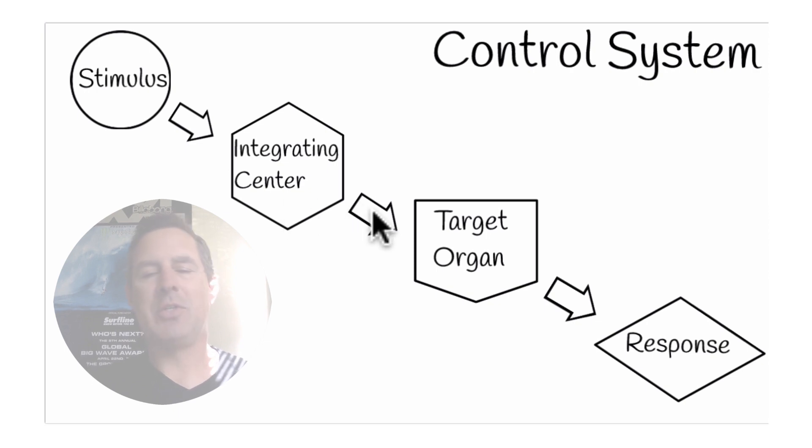Then the integrating center is going to send an output signal to a specific organ or organs, tissues, or structures within the body to help bring that variable back to its acceptable range. And then the response is that variable getting back to where it needs to be. So once again, if we had the stimulus of diminished body temperature of 95 degrees, the body's response would be to bring that body temperature back up to the acceptable range.